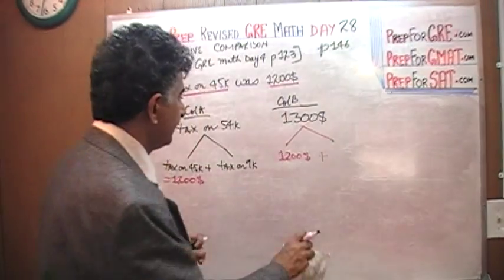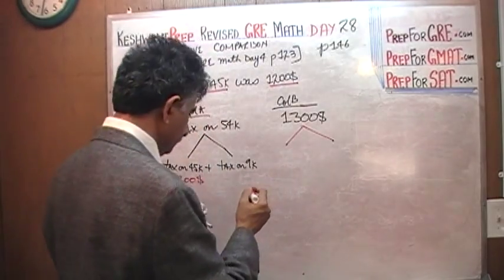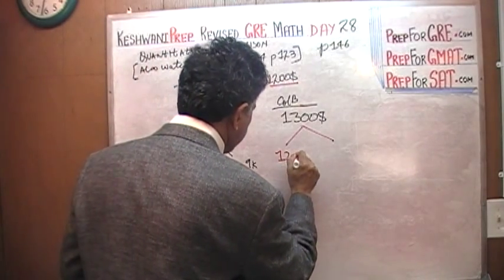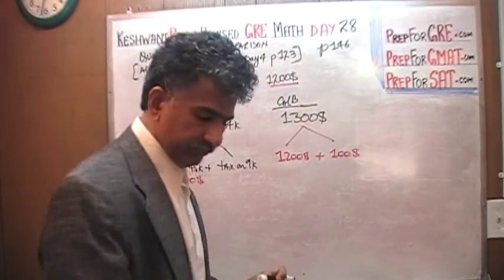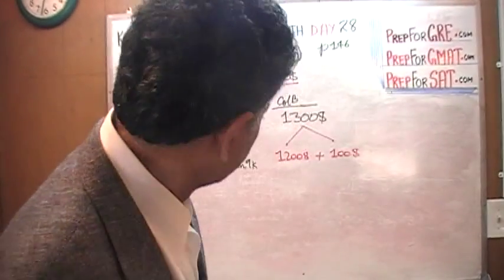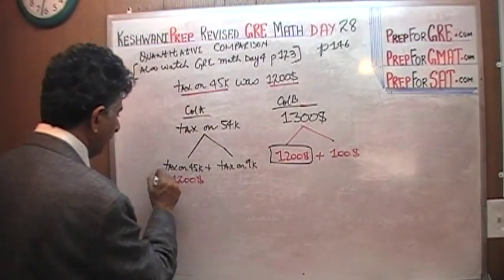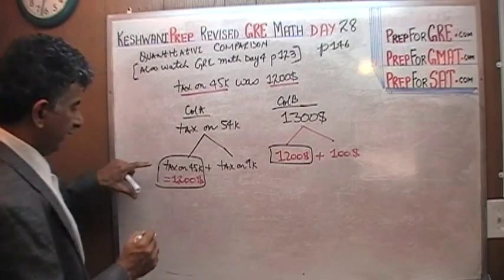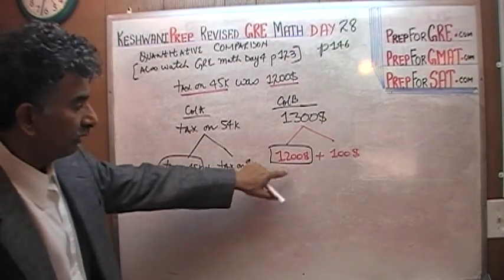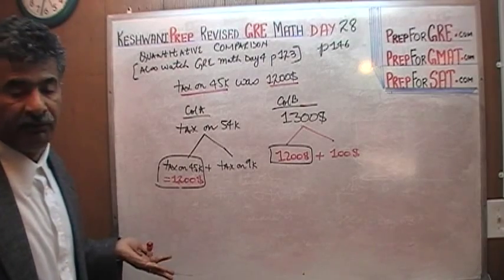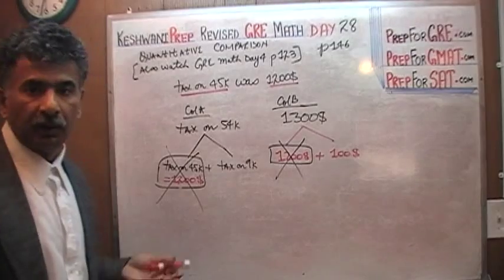So $1,300 equals $1,200 plus $100. But what do you notice? I see $1,200 here and I see $1,200 here — the tax on $45,000, which equals $1,200. So $1,200 appears in both columns; it plays no role. We can subtract $1,200 from both columns and just ignore it.